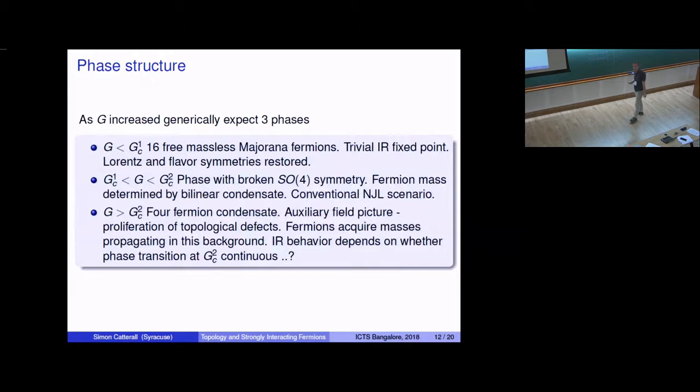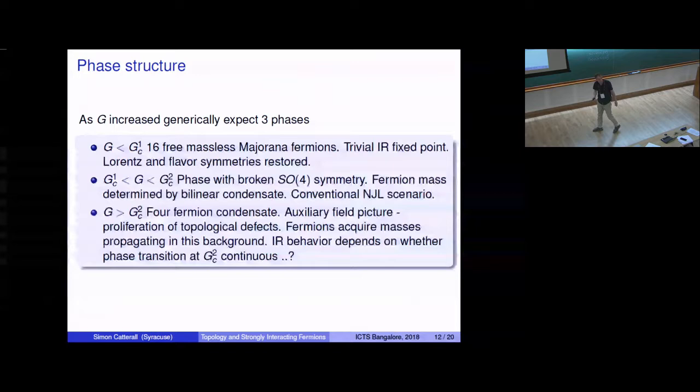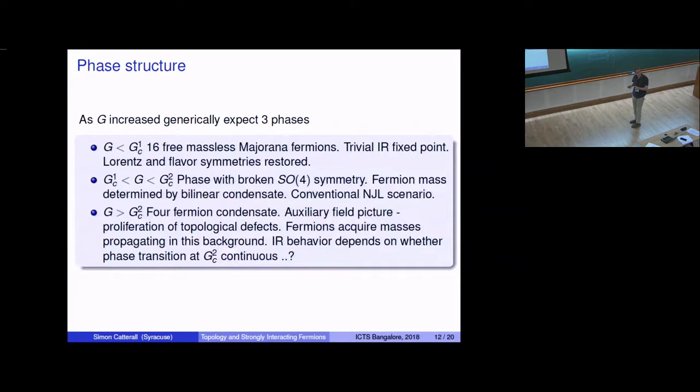As G is increased from zero, you might expect three phases. First of all, there's going to be a massless phase, with 16 Majorana fermions. So I started with four, and I took four copies, so I get 16. 16 is a magic number of fermions, again, according to Kitaev. Various interesting things can happen. So it has a trivial IR fixed point. We expect all the symmetries are completely restored and manifest. Then, following the usual NJL scenario that I sketched initially, I expect an intermediate phase with broken SO(4) symmetry. So it condenses a fermion bilinear. The fermion mass is then determined by the bilinear condensate. It's a conventional scenario. So generically, you expect that to occur, and that's what actually is seen in the numerics. There's a very narrow broken phase, which is inside of that peak I showed you essentially, where this essentially occurs.